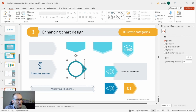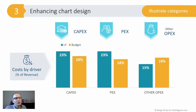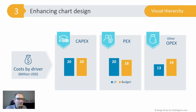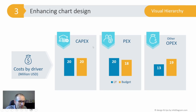This way you can enhance a chart by illustrating categories. The next thing you can do is group categories together by putting a light gray rectangle in the background.